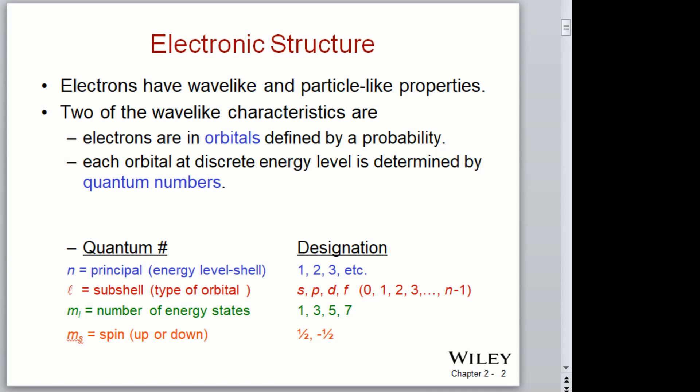The subshell describes the shape of the electron cloud. For example, the s subshell is round, the p subshell is tetrahedral-shaped — it's like tying four balloons together, and that's what the shape would look like.